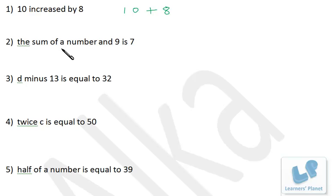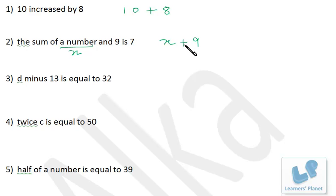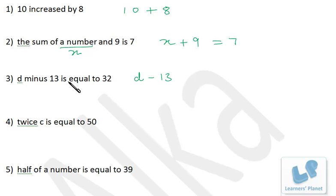The sum of a number and 9 is 7. Whenever you have 'a number,' choose that number as a variable. So sum of x and 9 — sum means addition — gives x + 9 = 7. Similarly, d minus 13 is equal to 32.